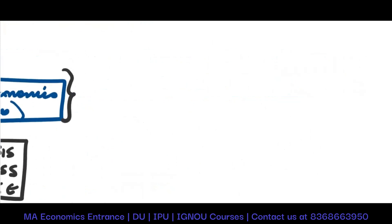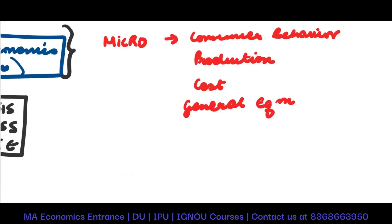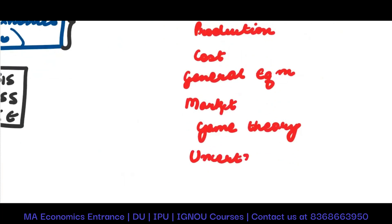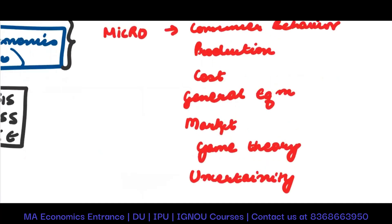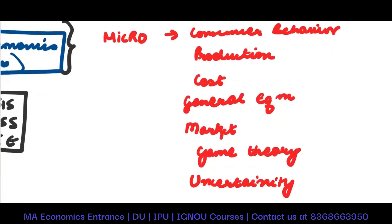Now let's come to what can come in economics. Let's talk about microeconomics. In microeconomics, the topics are the same. You have to do consumer behavior, then production, cost, general equilibrium. Then you have to do market and game theory. These are the important parts. One more important part that is asked here is uncertainty. This is very important for IAT and IGIDR paper. This is what consists of the microeconomics paper.